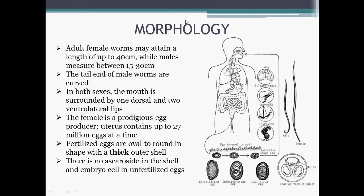Upon reaching the small intestines, they develop into adult worms, which can live for one to two years. Regarding morphology of Ascaris lumbricoides: adult female worms may attain a length of up to 40 centimeters, while males measure between 15 to 30 centimeters. As you can see in the image of the male adult worm, the male has a curved tail, while female worms do not.